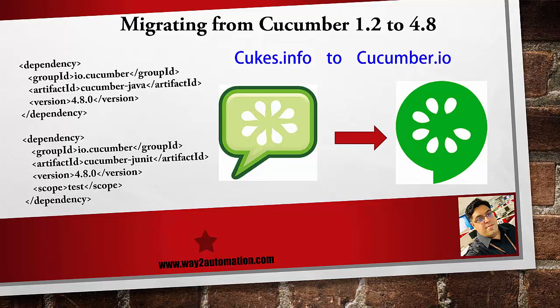I've seen many people facing issues with different versions of Cucumber jars and mismatching dependencies. These are the two major dependencies you need to include in your latest Cucumber project when using the Cucumber IO library. If you add the jars manually there are so many jars to include, so the best way is to follow a dependency management tool like Maven or Gradle.